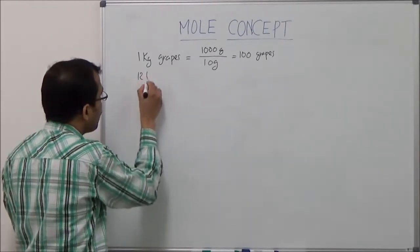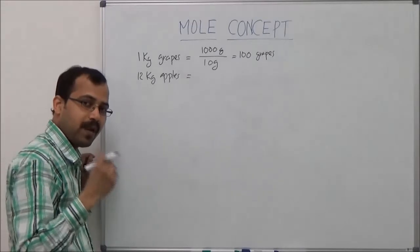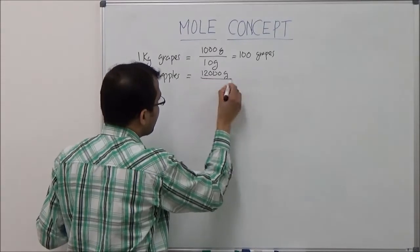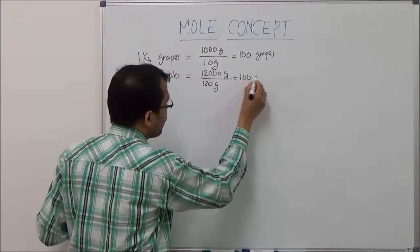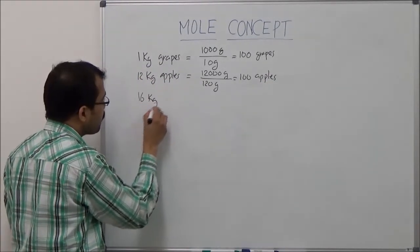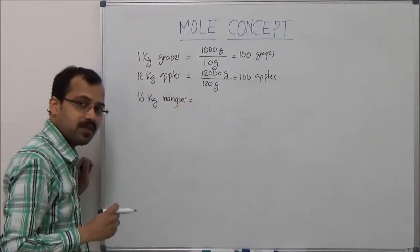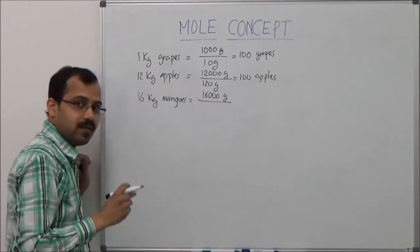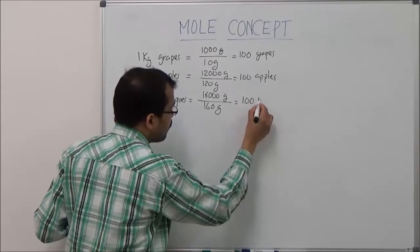He gave me 12 kilograms of apples. 12 kilograms of apples contains: 12,000 grams divided by 120 grams equals 100 apples. And he gave me 16 kilograms of mangoes. How many mangoes? 16,000 grams divided by 160 grams equals 100 mangoes.